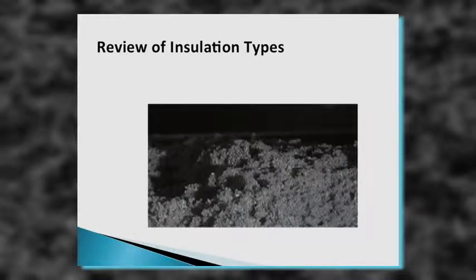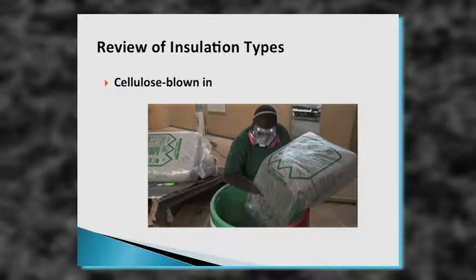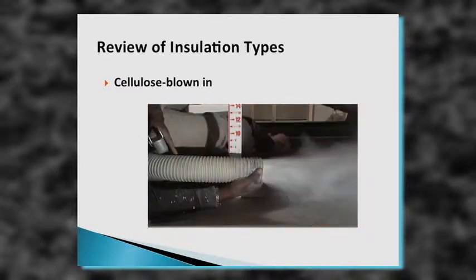Now let's talk about insulation types. Cellulose insulation is simply recycled newspaper that's been treated to be fire resistant — not fireproof. The first installation method is blown-in: you take the cellulose, throw the bag in the hopper, it gets chopped up and blown through a hose. It comes out fluffy and you play it where it lies — it drops in that spot and that's where it stays.